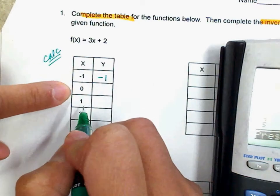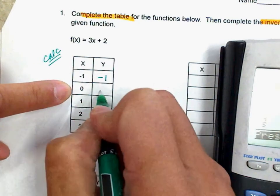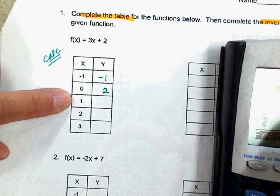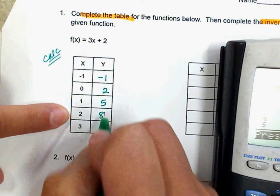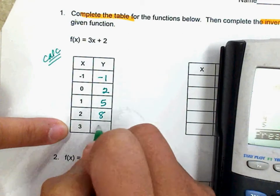Negative one. When x is zero, what is your y? Two. When x is one, what is your y? When x is two, what is your y? When x is three, what is your y? Eleven.